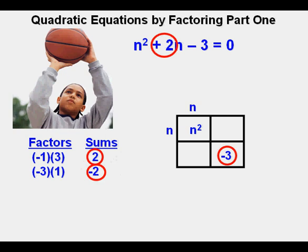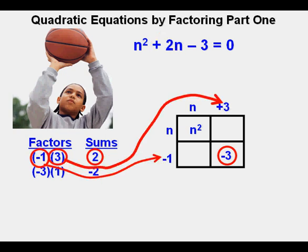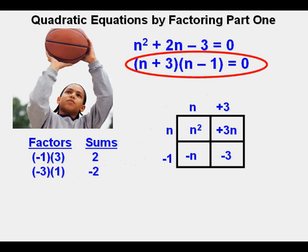This is the combination that has a sum of 2. So we put the number factors here as the arrows show. We have positive 3 on top and negative 1 on the side. And part of the check is to multiply them out. We see that the factors are quantity n plus 3 times the quantity n minus 1. We write them out below the original trinomial.